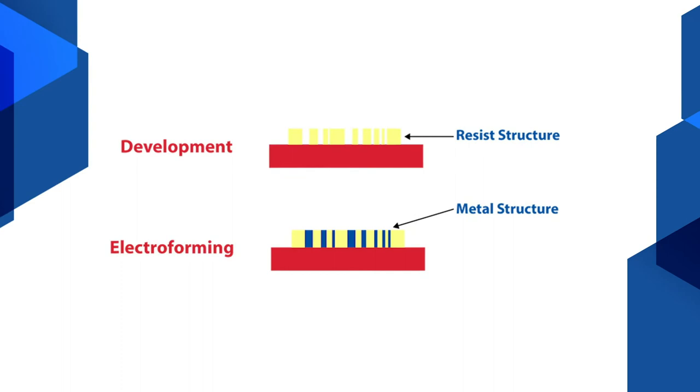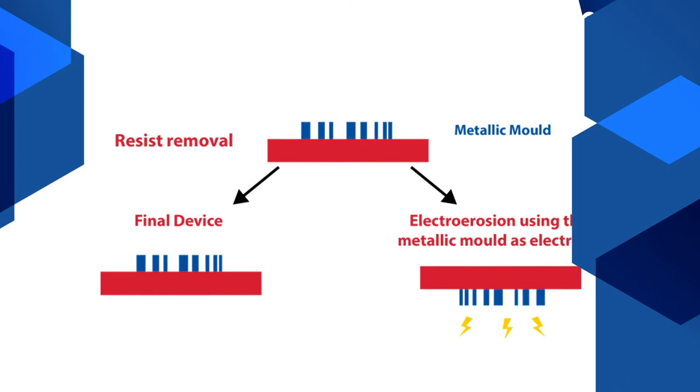Moreover, if we attach our sensitive material on a conductive substrate, after irradiation and development, we can grow metals in the holes of the plastic and then get rid of it to have a mould or an electrode. So we can obtain many pieces with a single irradiation. This is the so-called LIGA technique: